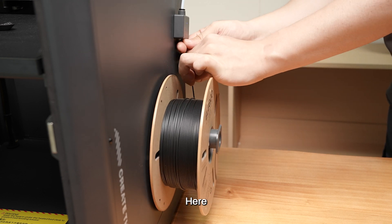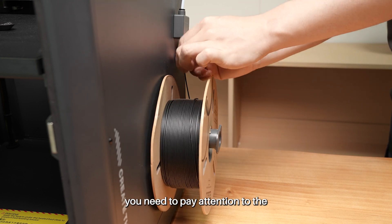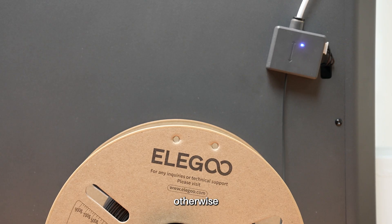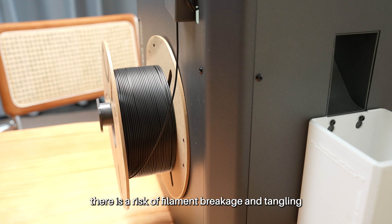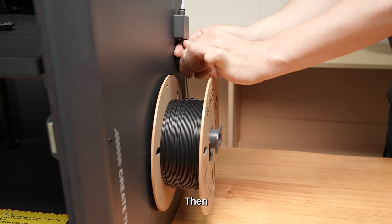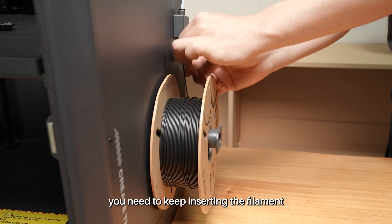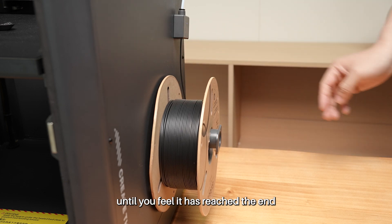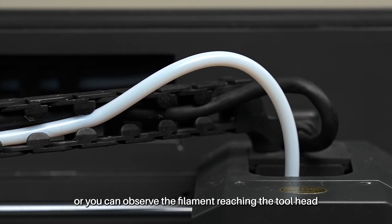Step 2 is to insert the filament. Here, you need to pay attention to the placement direction of the filament's spool, otherwise there is a risk of filament breakage and tangling. Then, you need to keep inserting the filament until you feel it has reached the end, or you can observe the filament reaching the toolhead.